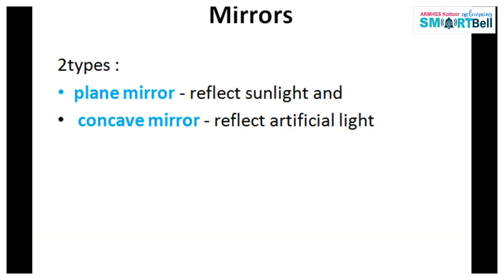We are studying about the light microscope, which works by using light. A mirror is used in a microscope to reflect the light, and two types of mirrors are present: one is the plane mirror and the other is the concave mirror. The plane mirror reflects sunlight, and the concave mirror reflects artificial light.